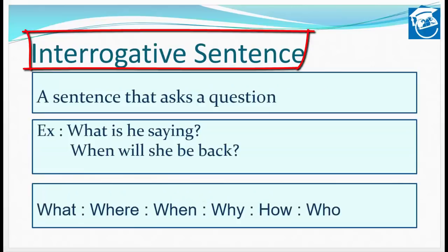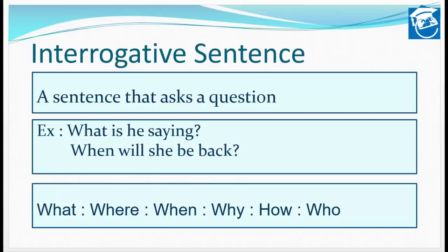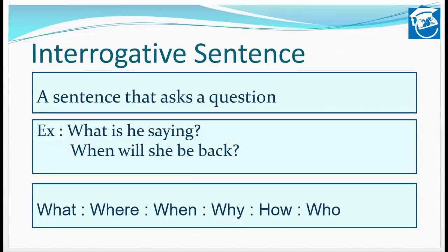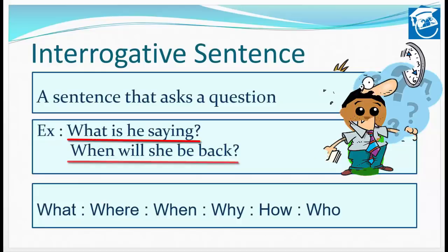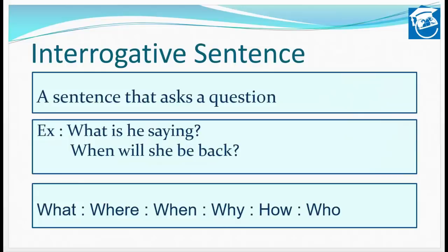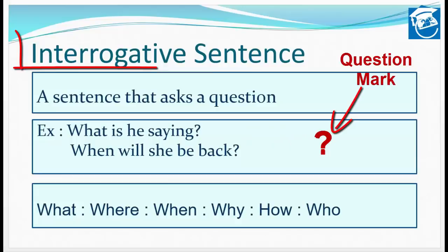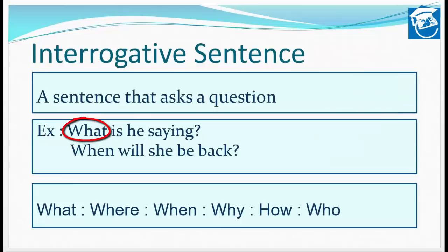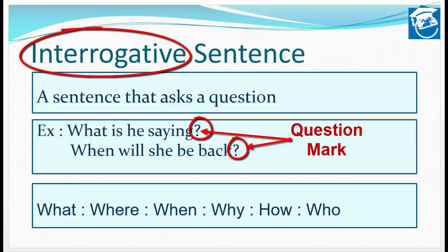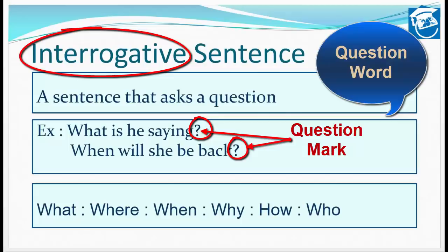Then we have the interrogative sentence — a sentence that asks a question. ऐसे sentences जो प्रश्न पूछने के लिए उपयोग में आते हैं, हिंदी में इन्हें प्रश्नवाचक वाक्य बोलते हैं। For example, 'What is he saying?' and 'When will she be back?' दोनों cases में sentence के end में question mark लगाया गया है — यह पहचान है interrogative sentence की। पहले example में 'what' से शुरुआत हुई, दूसरे में 'when' से।